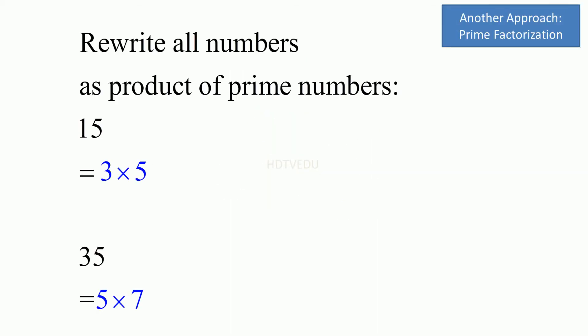Let us find the LCM using prime factorization. The numbers that we have are 15 and 35. 15 is 3 times 5. How about 35? 35 is 5 times 7.